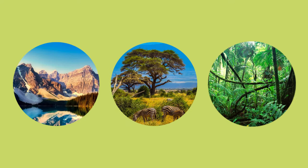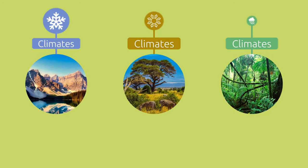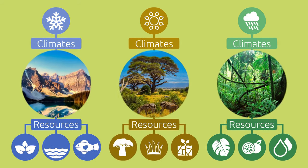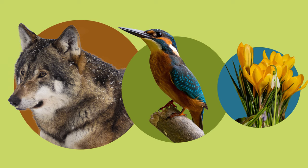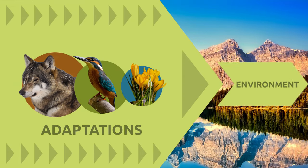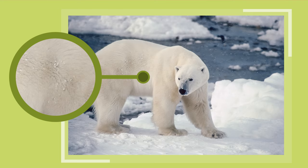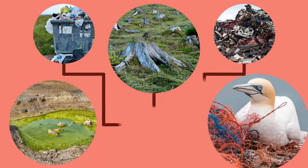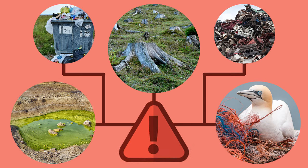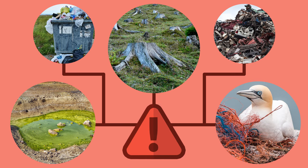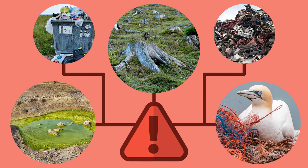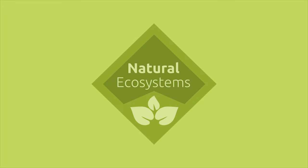Natural ecosystems are those areas that have developed without human intervention. Their diversity occurs due to different climates and resources found in each of them. The animals and plants in a natural ecosystem have developed adaptations related to their environment — polar bears, for example, are white to camouflage themselves in the North Pole. If those environments are destroyed or if there's a change in resources, the interaction among the elements of the ecosystem would be altered and could endanger their existence.